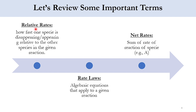Next is the relative rate. The term 'relative' means we compare one species with another — how fast one species is appearing or disappearing relative to another. For example, if A and B are reactants, the relative rate of A is how fast it is disappearing with respect to B, and vice versa. Similarly for products C and D, how fast C is appearing with respect to D and how fast D is appearing with respect to C.